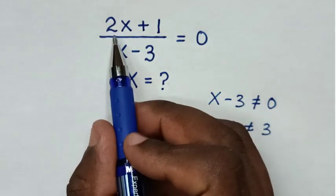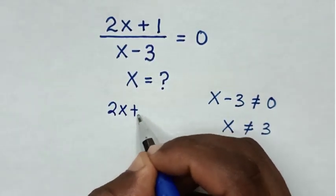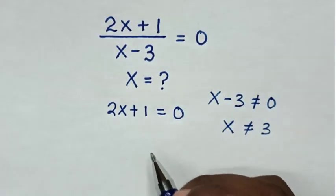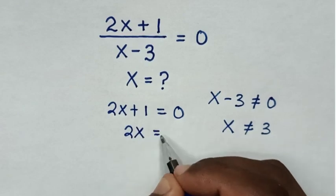Then from the numerator 2x plus 1 is equal to 0. Then we take 1 to the right side so it will be 2x is equal to negative 1.